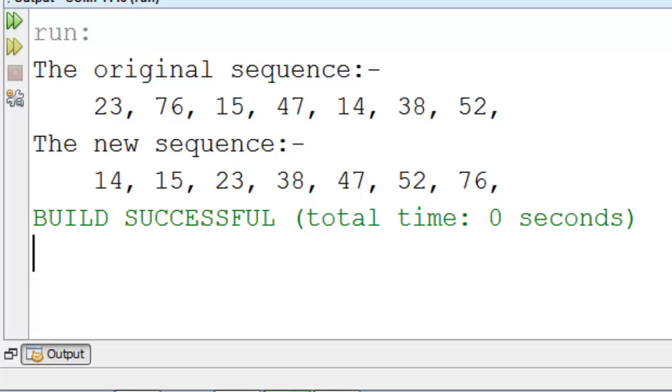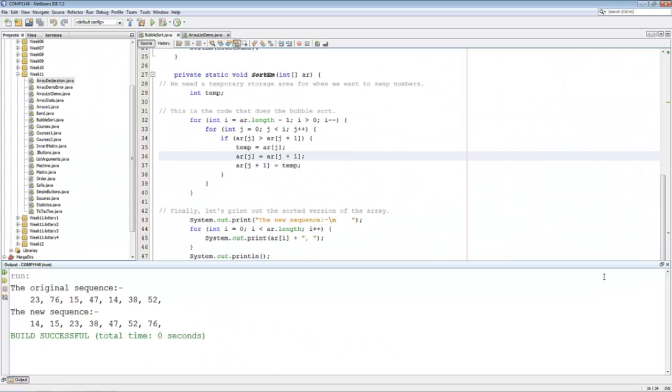14, 15, 23, 38, 47, 52 and 76. The bubble sort works.